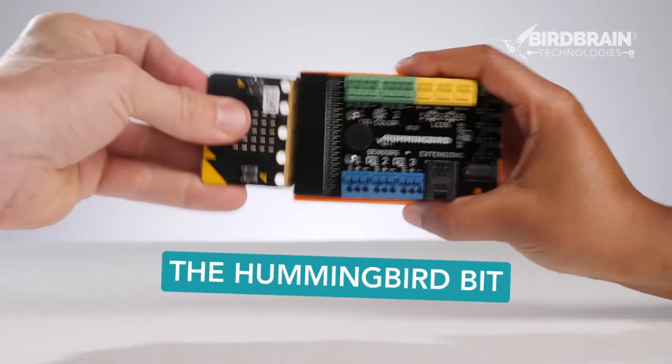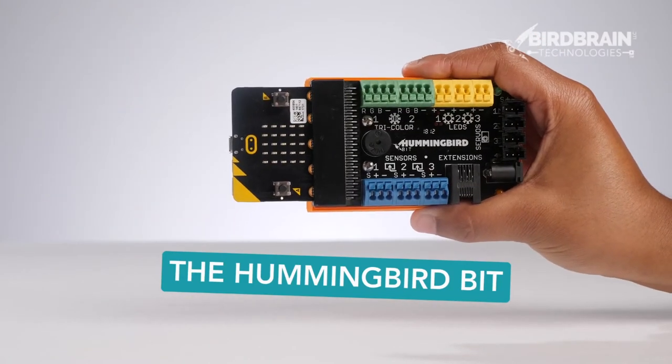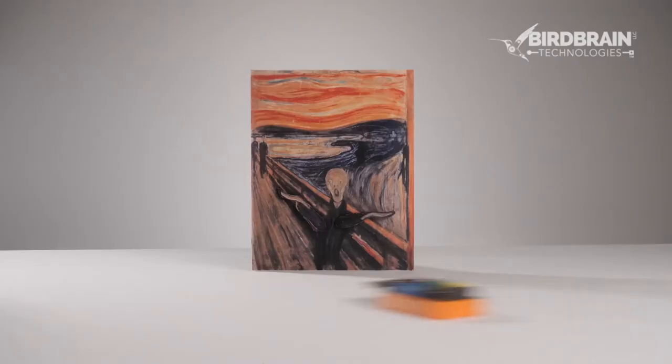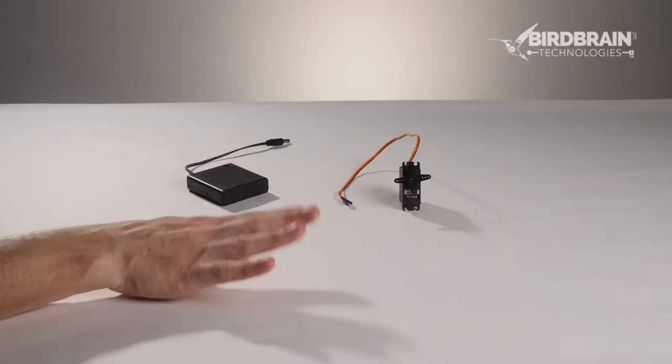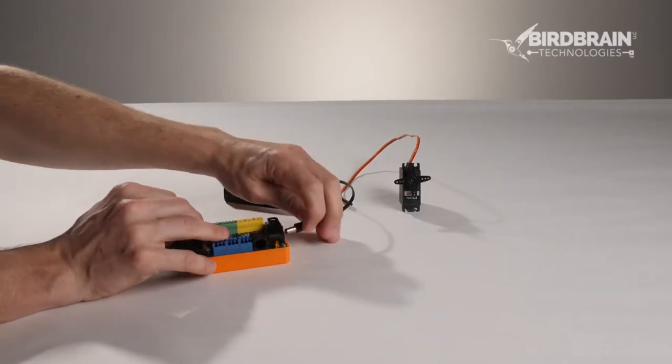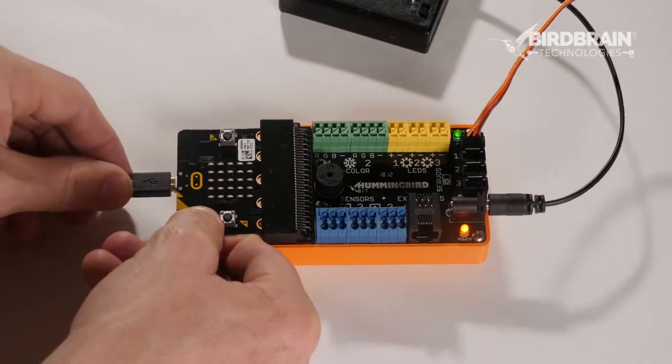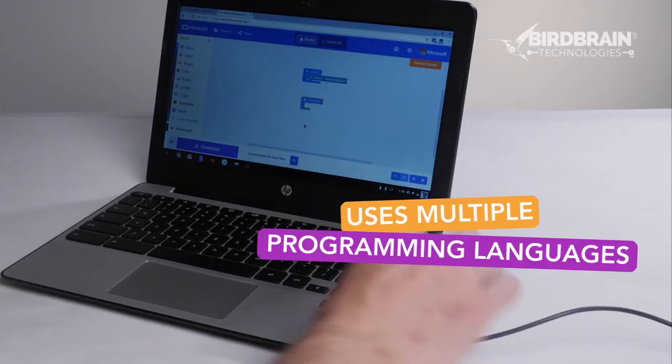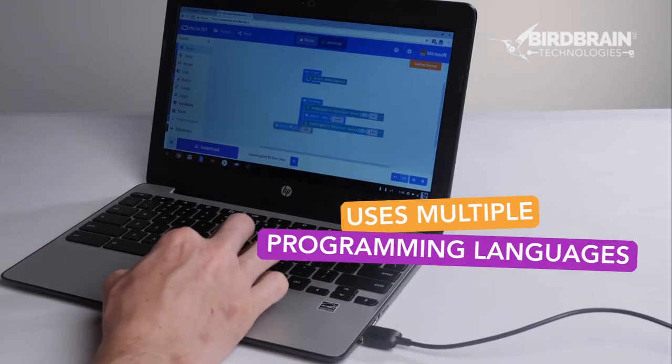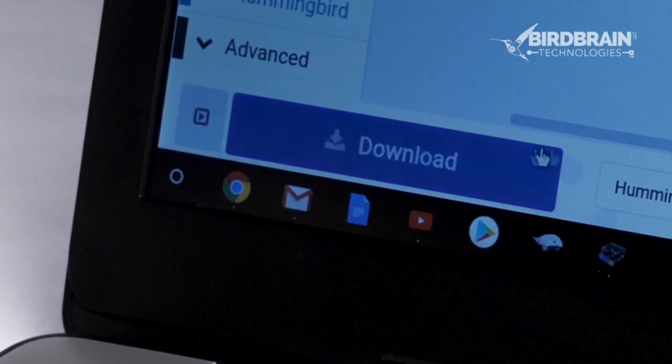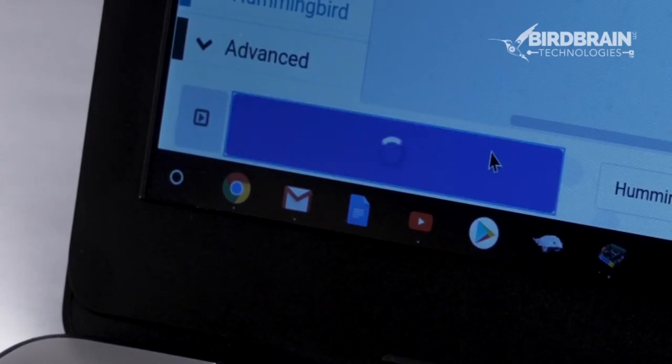While the Finch robot focuses on learning to code, the Hummingbird kit offers teachers a tool to add STEAM learning into any subject area. The Hummingbird robotics kit allows students to creatively engineer and code a unique robot out of any material, with any device, and in programming languages for all experience levels.